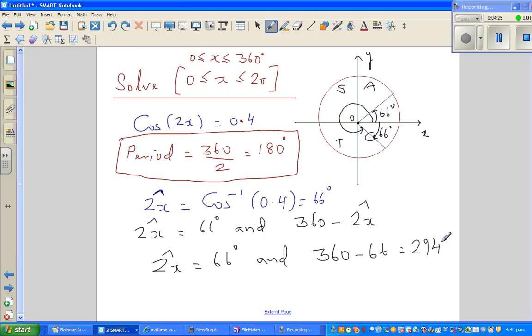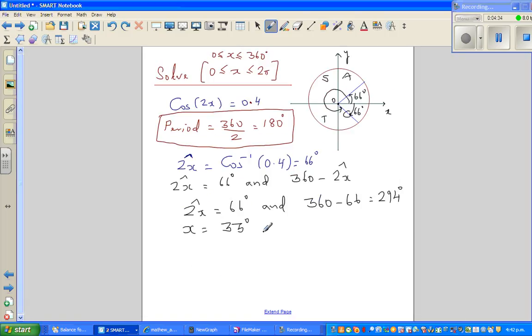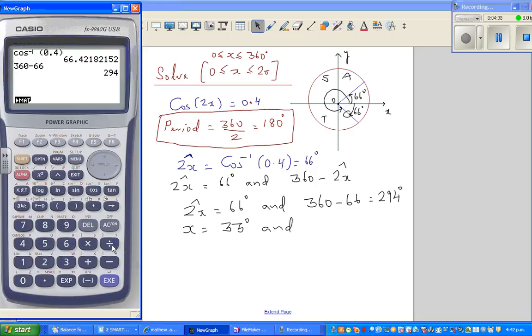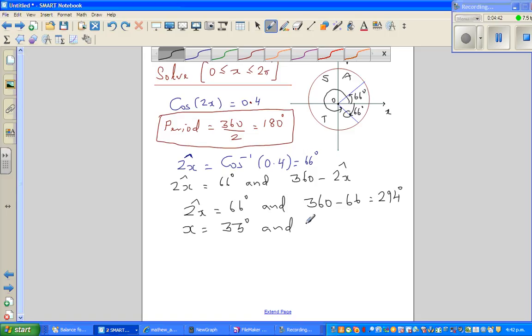So 2x reference is 66 degrees and 294 degrees are the two angles. But we want to find only x. So x is half of this, that is 33 degrees, and half of 294, which is 147.